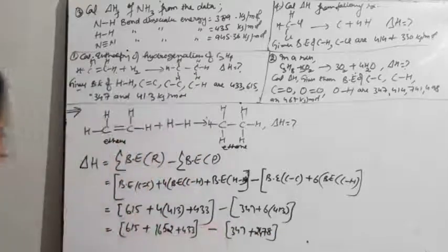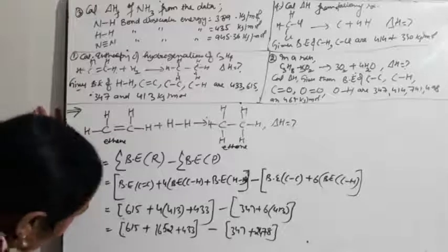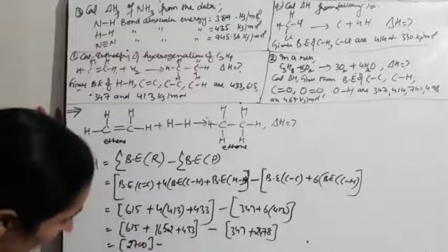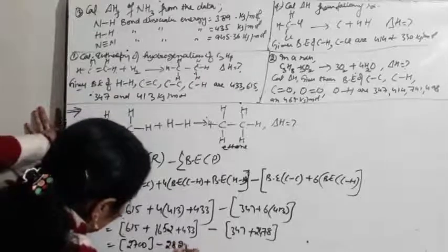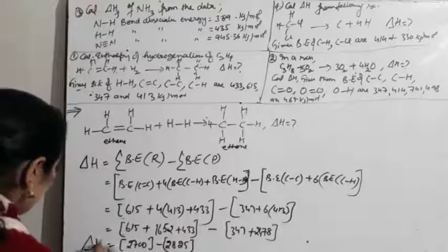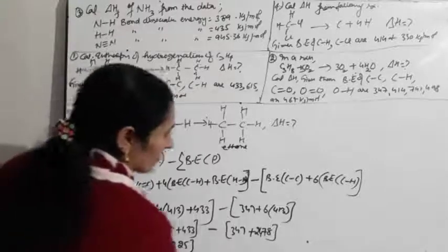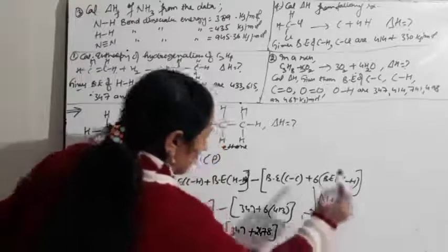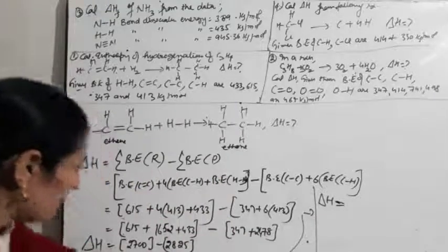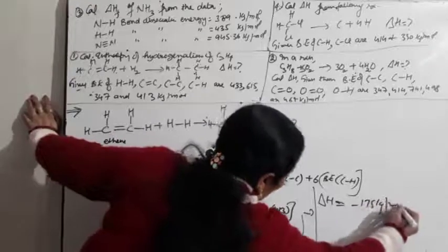Calculating reactants: 615 + 1652 + 433 = 2700. Calculating products: 347 + 6×413 = 347 + 2478 = 2825. Delta H = 2700 − 2825 = −125 kJ/mol. Wait — let me recalculate: 2700 minus 2825 gives −125 kJ/mol. This is the enthalpy of hydrogenation of ethene.